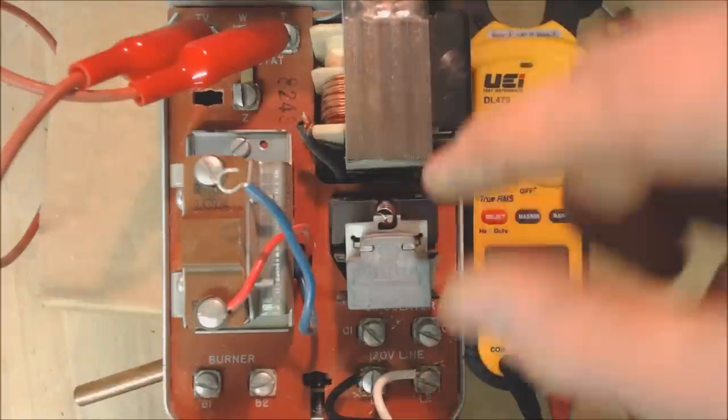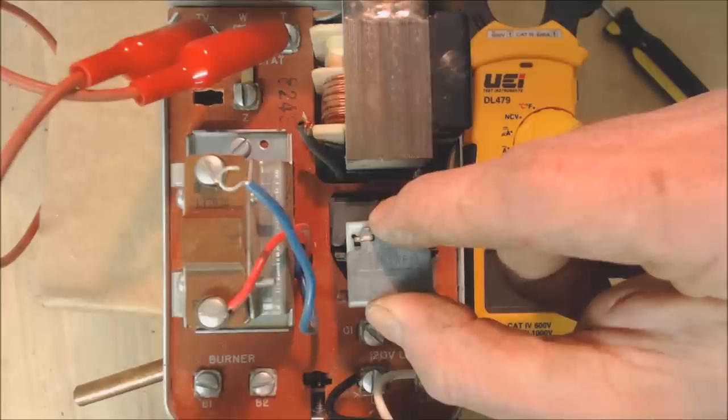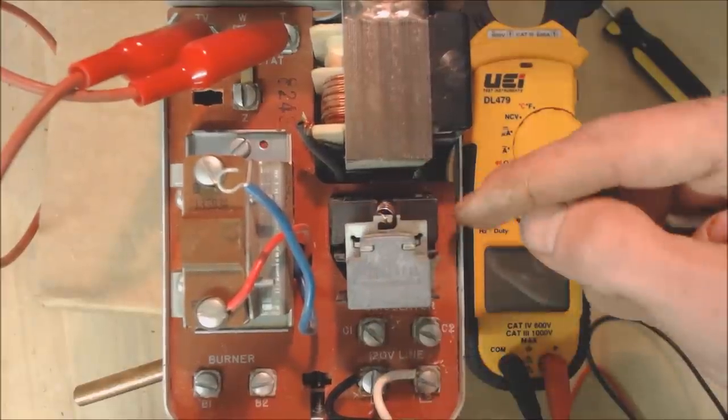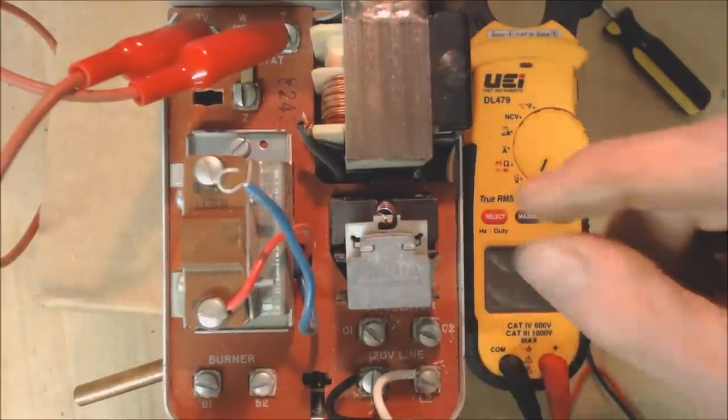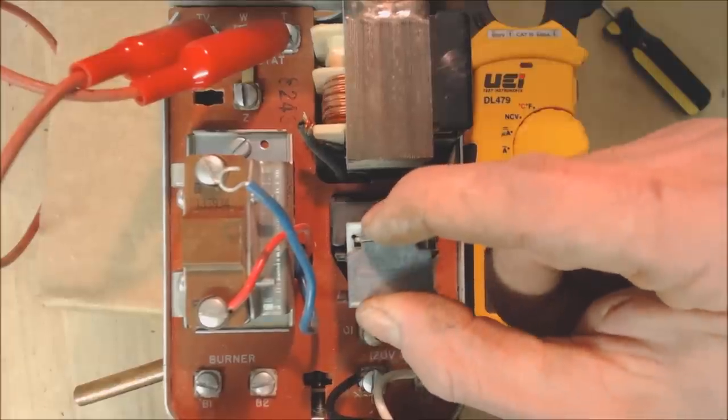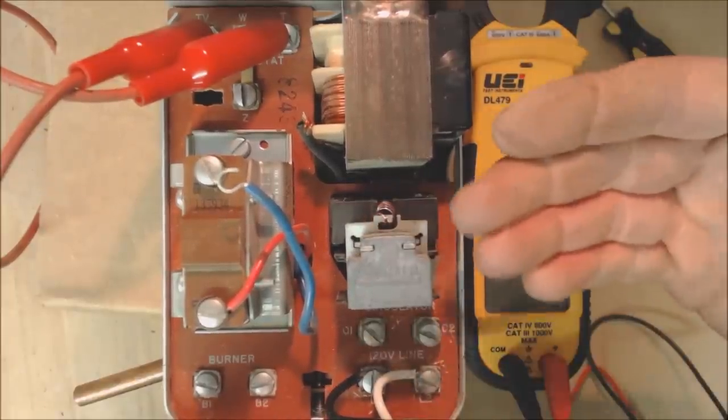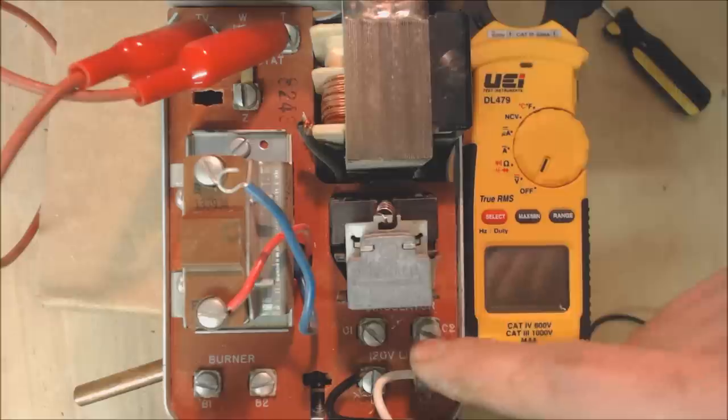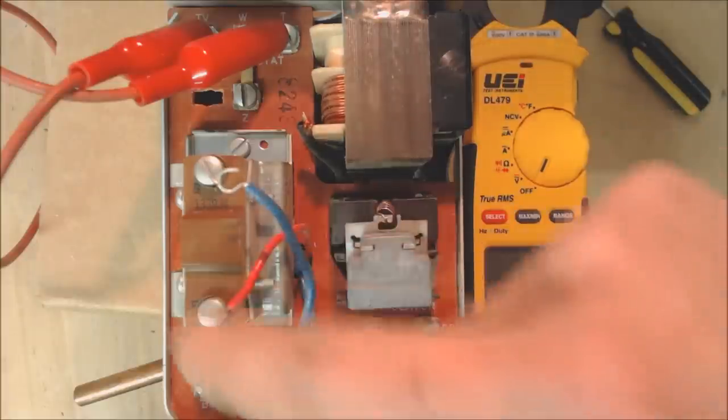Anytime that your thermostat calls for heat, this is going to suck down, and sometimes those contacts are just worn and they're not making a very good contact. So you could not be getting power to either your circulator or over to your temperature control here.